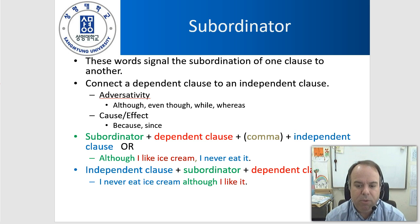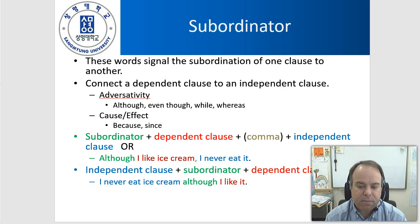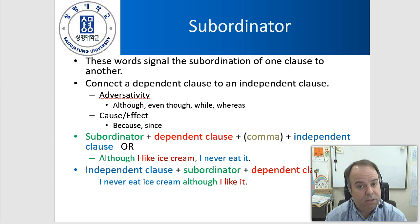Those aren't the only ones, but they're the ones you'll probably see most often. The structure is: subordinator plus dependent clause plus comma plus independent clause. For example: 'Although I like ice cream, I never eat it.' Another way is to reverse it — independent clause then subordinator then dependent clause, with no comma needed: 'I never eat ice cream although I like it.'